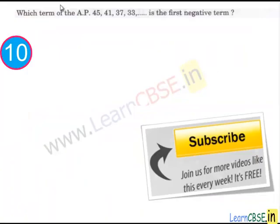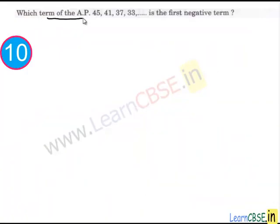Let's move to the next question. In this question, which term of the AP 45, 41, 37, 33 is the first negative term? According to the problem, we have to find out the first negative term of this AP.